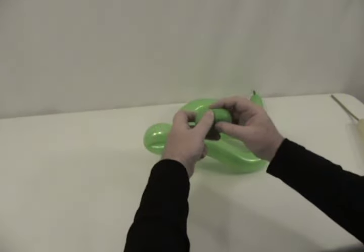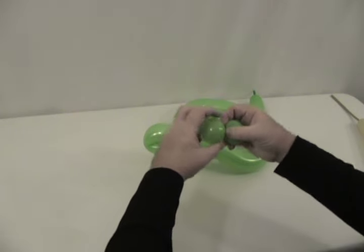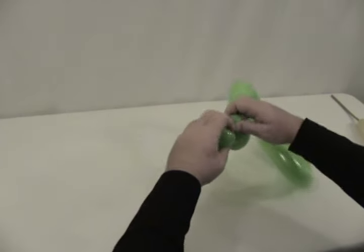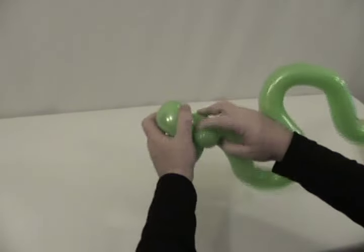Then I'm going to take the green round, divide that into two equal bubbles. This will give him some cheeks. It just has a little more character. Also helps lock everything in place.